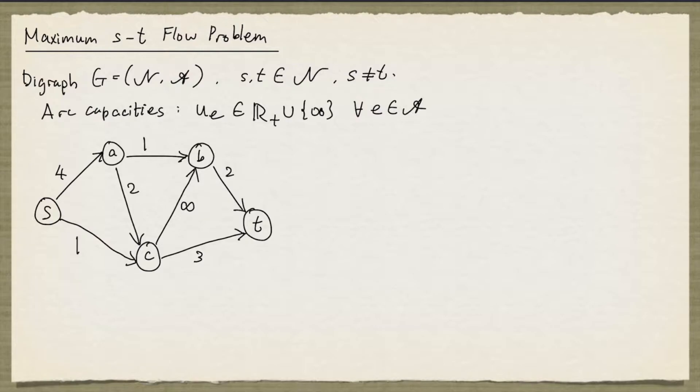Here the numbers beside the arcs are the arc capacities. The way to think about an arc with infinite capacity is to think of it as an arc without any capacity. But in practice, infinity can be replaced by a very large constant.